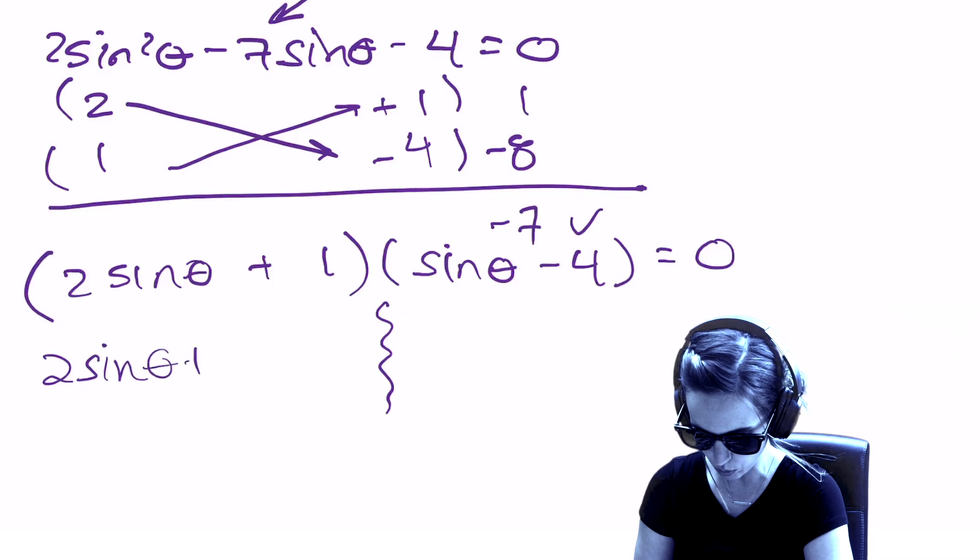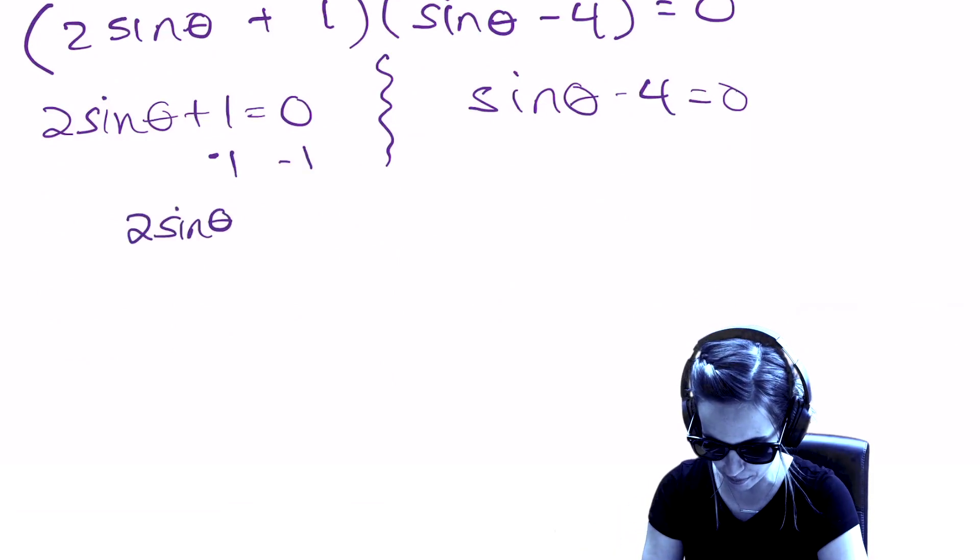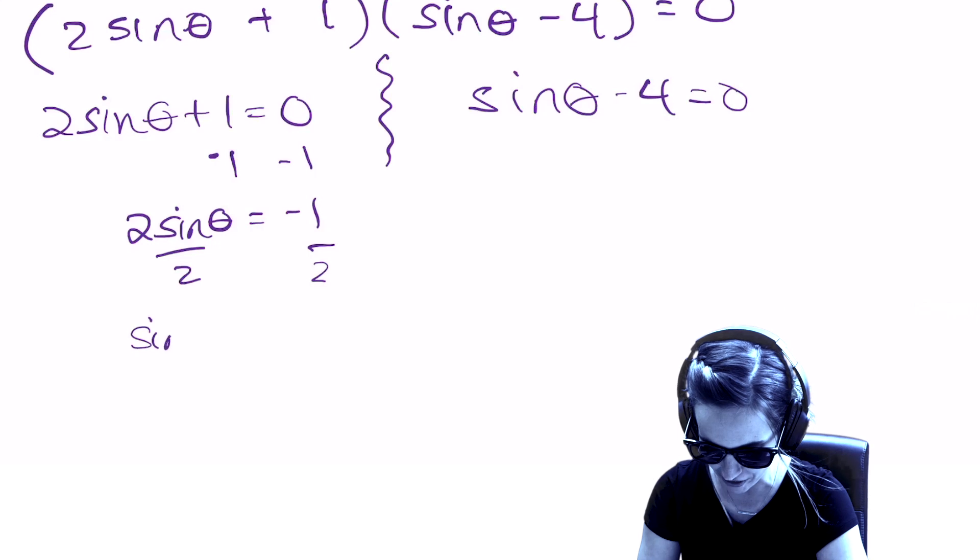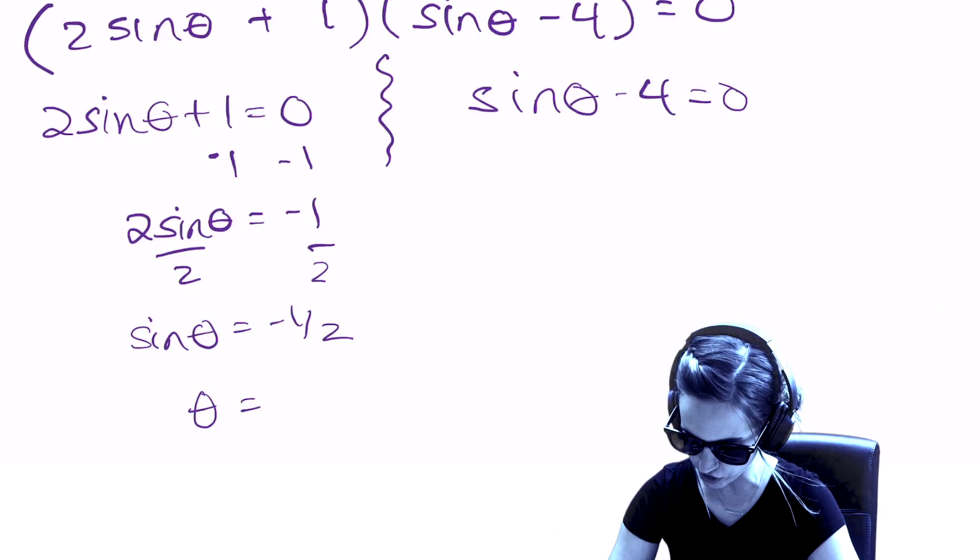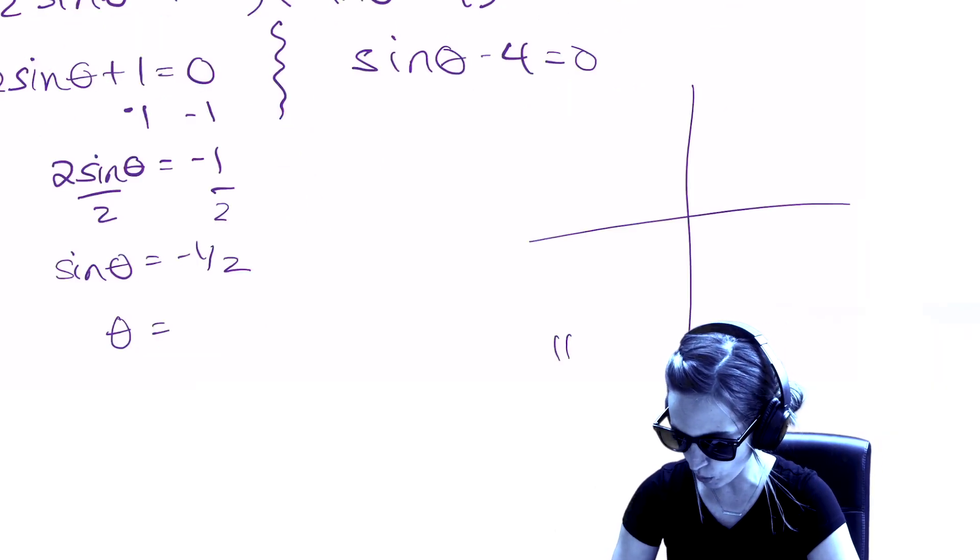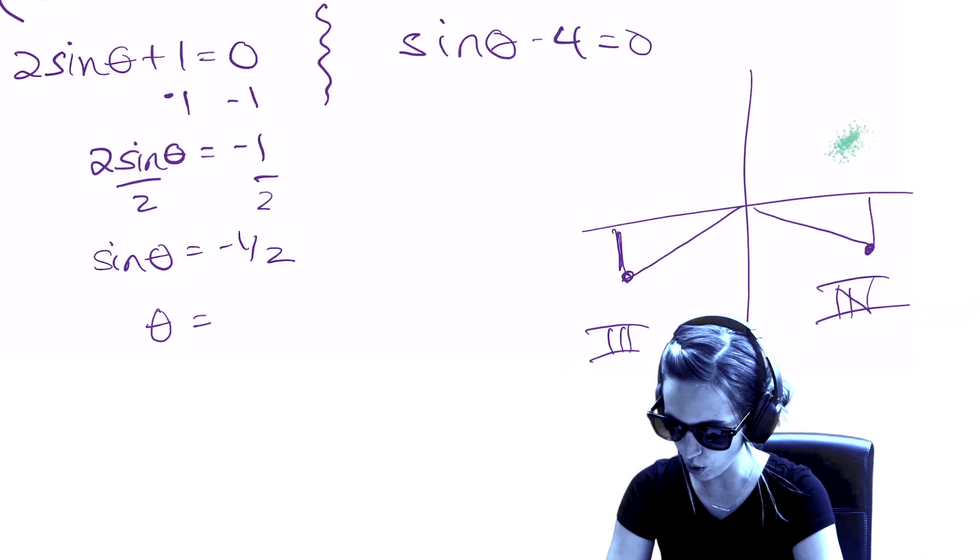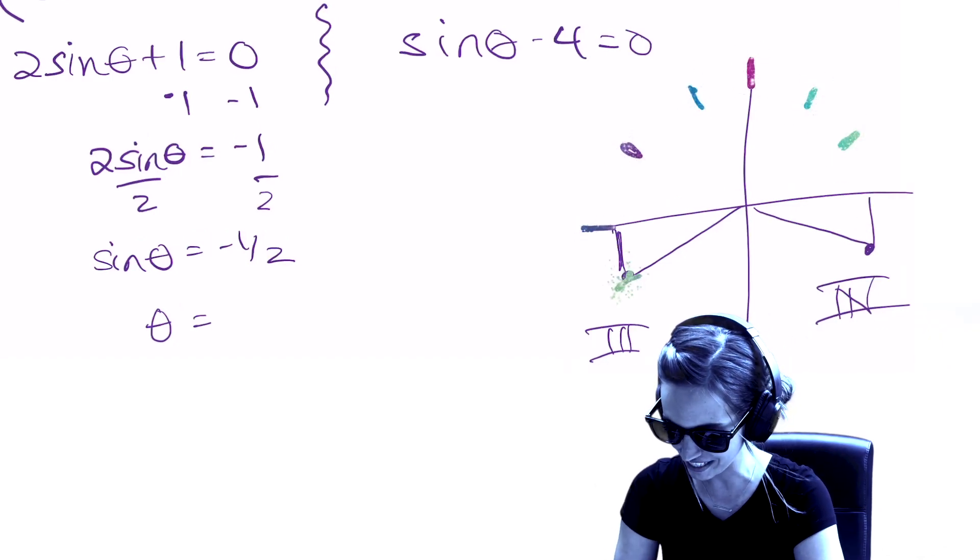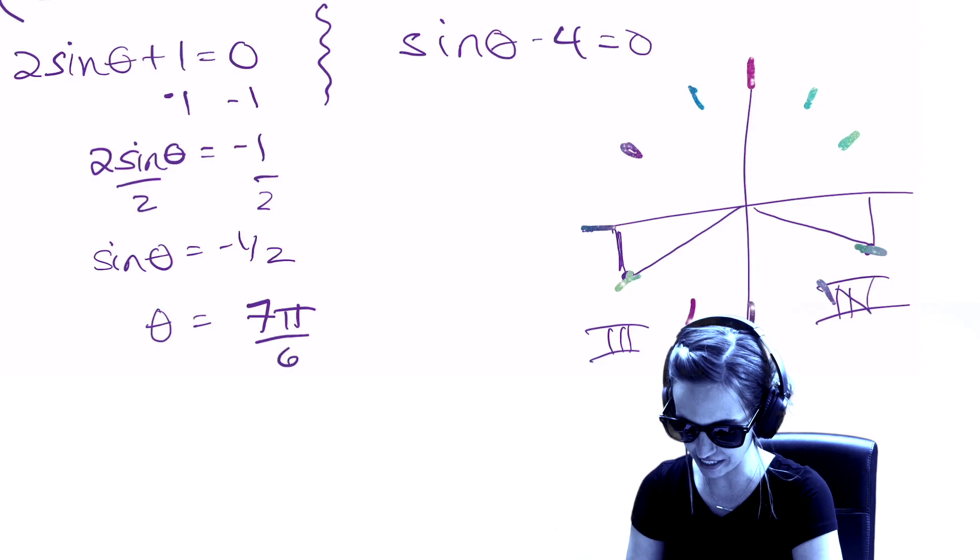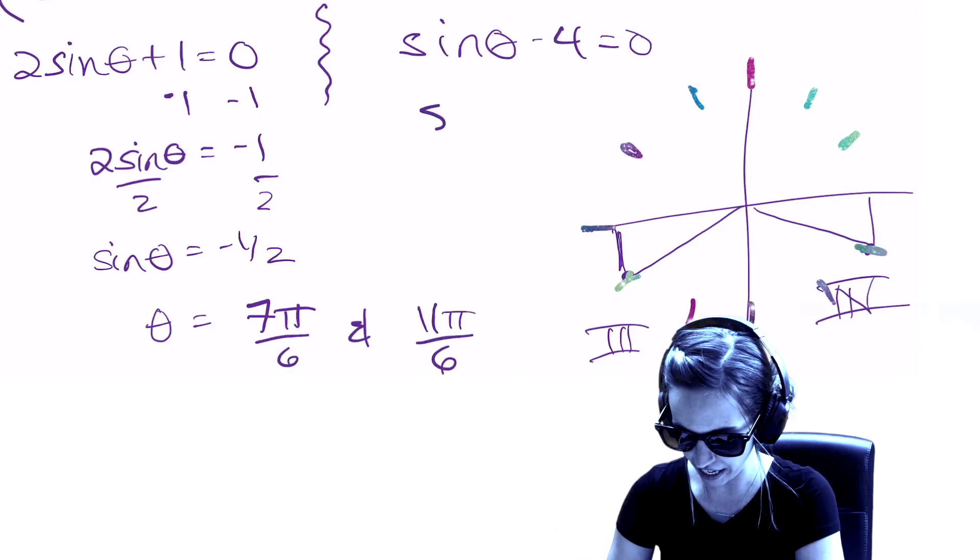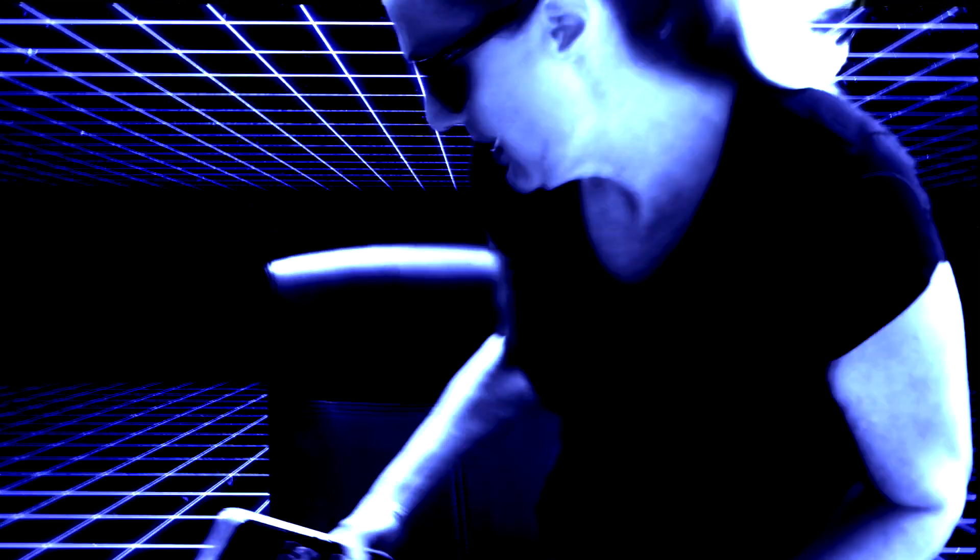Zero product property: 2 sine theta plus 1 equals 0, sine theta minus 4 equals 0. I got to solve the first one. Minus 1, minus 1. 2 sine theta equals negative 1. Divide off my 2. I get sine theta equals negative 1 half. Where does theta satisfy this equation? Let me think of the unit circle. Sine is the y coordinate, so I'm going to look at the third quadrant and the fourth quadrant. Negative 1 half is the y coordinate here and here. Those are my sixes. So if I count around, 1 sixth, 2 sixth, 3 sixth, 4 sixth, 5 sixth, 6 sixth, 7 pi over 6, 8, 9, 10, 11 pi over 6. So my two answers are looking like 7 pi over 6 and 11 pi over 6. But wait, sine theta equals 4. That is out of range. So these are our two answers. Agent R, 7 pi over 6 and 11 pi over 6. Missile terminated.